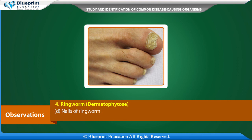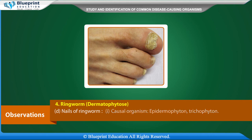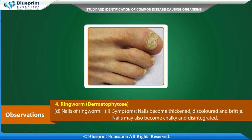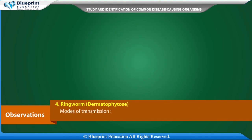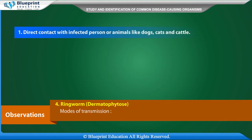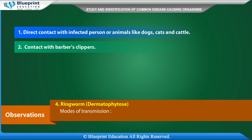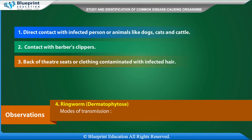Nail ringworm: the causal organisms are Epidermophyton and Trichophyton. Symptoms include nails becoming thickened, discolored, and brittle; nails may also become chalky and disintegrated. Modes of transmission include direct contact with an infected person or animals like dogs, cats, and cattle, and contact with barbers' clippers, backs of theater seats, or clothing contaminated with infected hair.